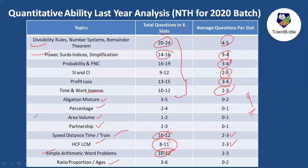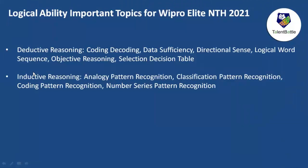Now let's check logical ability important topics. Logical ability is divided into deductive reasoning and inductive reasoning. Under deductive reasoning: coding-decoding, data sufficiency, direction-based problems, logical word sequence, objective reasoning, selection decision tables. Inductive reasoning consists of pattern recognition — number pattern, coding pattern, classification pattern, and analogy pattern.